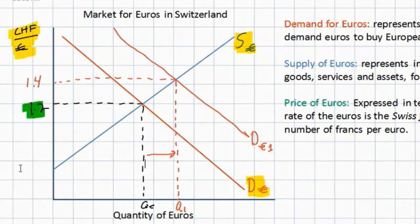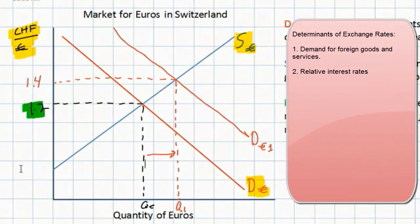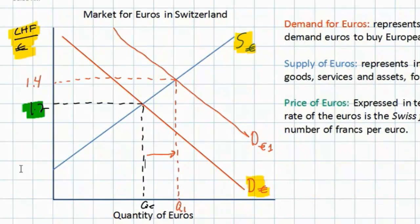One other factor that could increase the demand for euros in Switzerland might be an increase in interest rates in European countries. This wouldn't lead to a greater demand for European goods; rather, it would lead to a greater demand for assets in European countries, for which Swiss households would require a greater quantity of euros. Higher interest rates in European countries can cause the demand for euros to rise, as Swiss households would wish to save their money in European assets as opposed to Swiss assets.